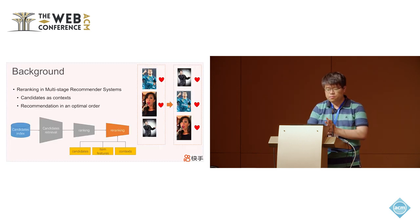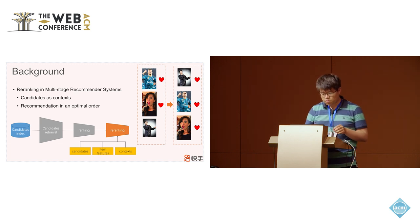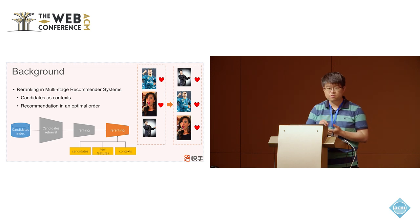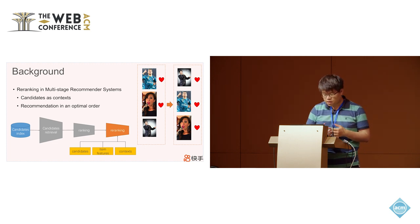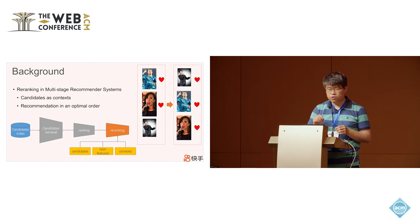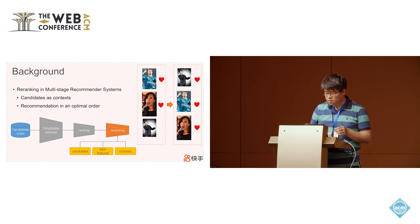Let's first look at a brief introduction of real-life recommendation systems. Re-ranking serves as the last stage, which usually consists of two stages. The first stage is candidate retrieval, which selects candidates from maybe billions of items. The second stage ranks those candidates, and re-ranking tries to re-order the items from the ranking stage so they are presented to the user in an optimal order.